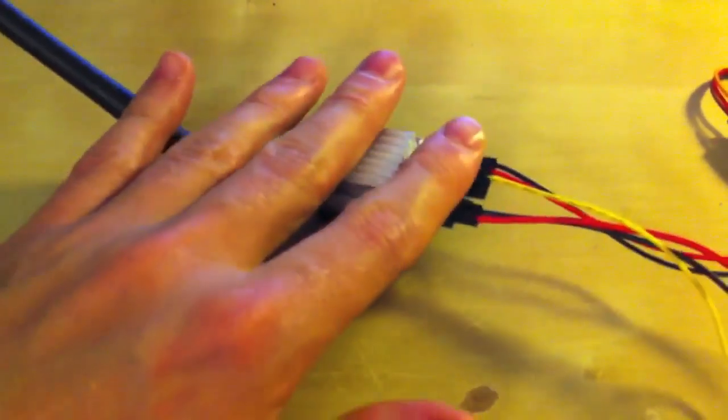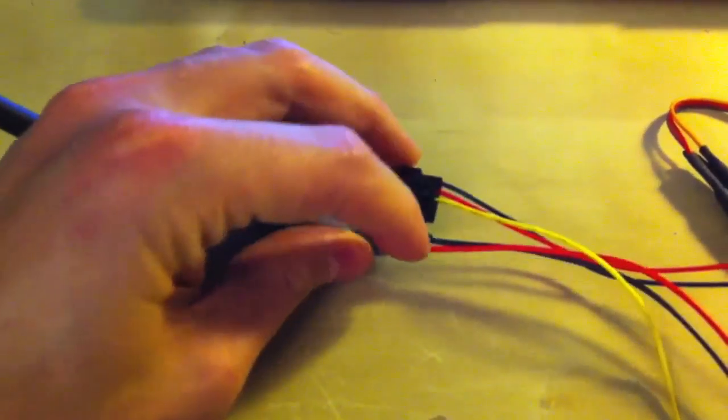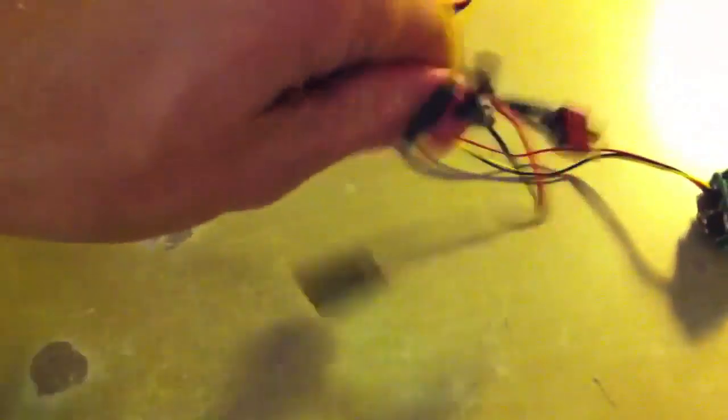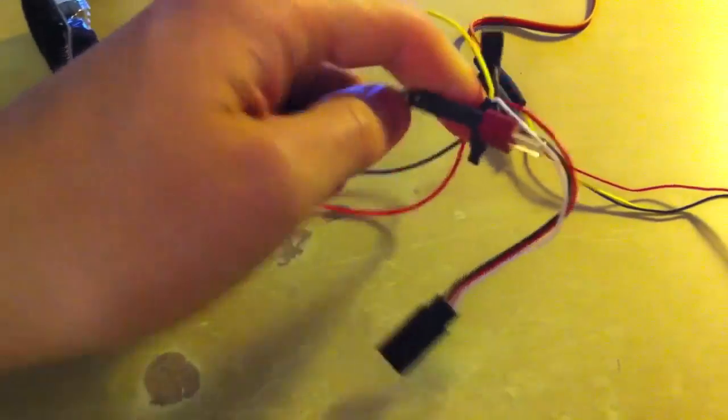Now this is the video transmitter. This first cable here on the bottom has the power. Once again I just connected a Dean's connector on here just because that's all my batteries are.